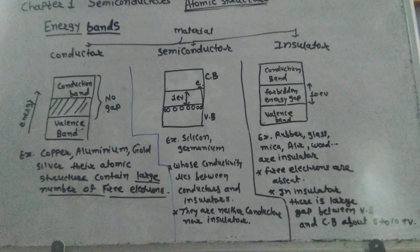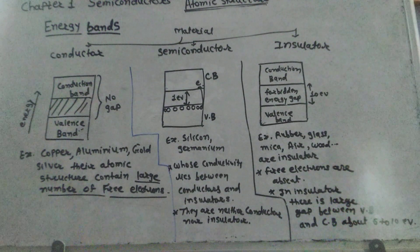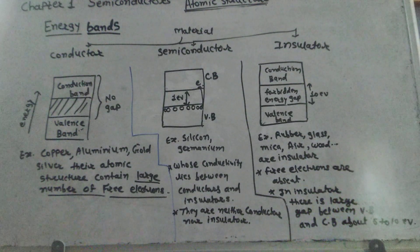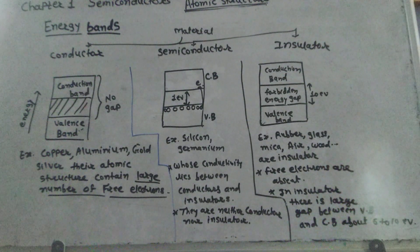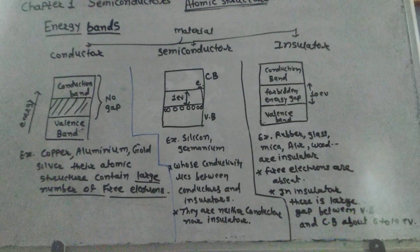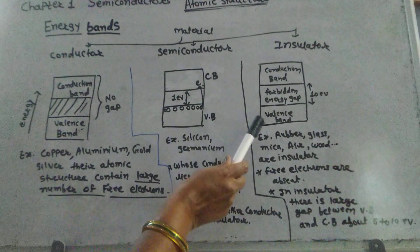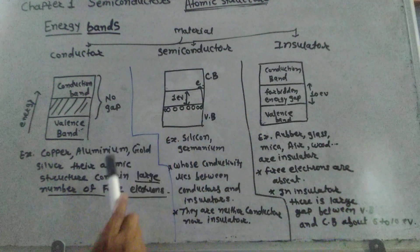In an insulator, all the electrons of such a material are tightly bonded by their nucleus, and no free electron is available for carrying current or conduction. In an insulator, there is a valence band and a conduction band.